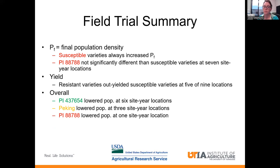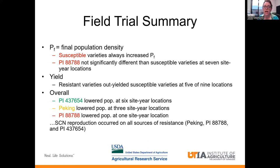So you can see that this problem is widespread. SCN reproduction occurred on all of the sources of resistance — keep that in mind. It's not going to completely eliminate that nematode's ability to reproduce; it's just lowering it when you use certain types of varieties.